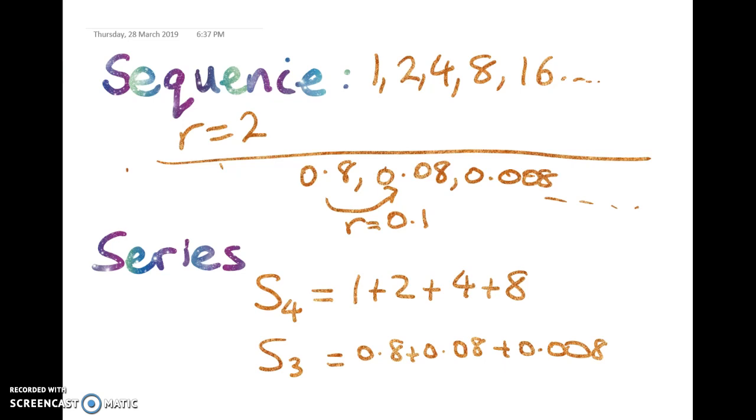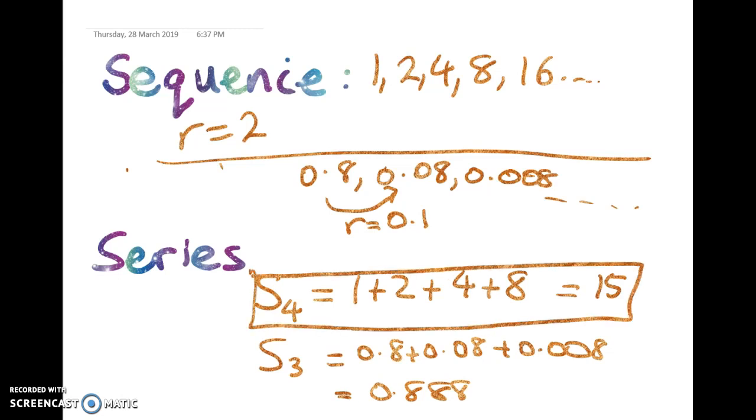Now in those two examples we can figure out what those sums are really easily. This one here, let's see if I can do it without mucking it up, there's going to be 15 and this one here will be 0.888. But in scholarship problems we often want to work with that idea in a difficult context such as a complex numbers one or an algebra one. And what we're going to learn how to do is to find a formula that will let me find that 15 from using the formula.